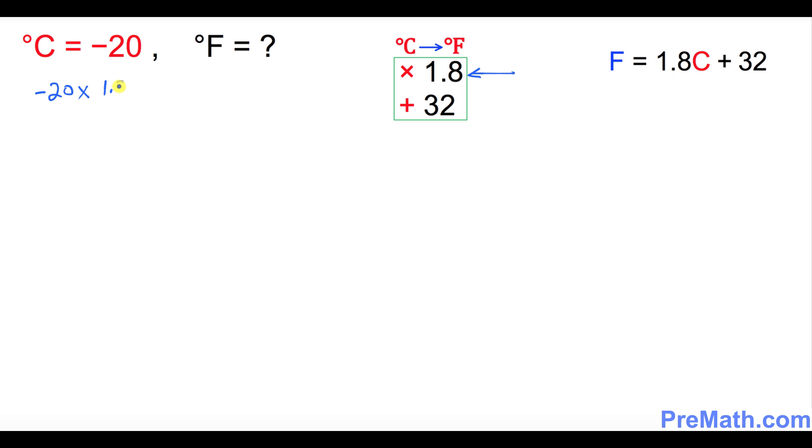1.8 and that is going to give you negative 36. So the next thing is I want you to add 32 to it and that's going to give you negative 4. So thus F equals negative 4 degrees turns out to be our answer.